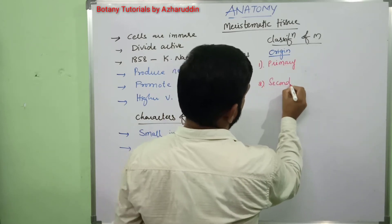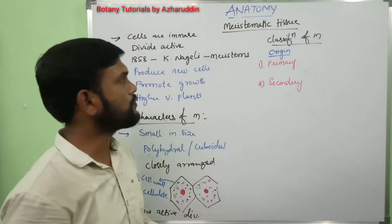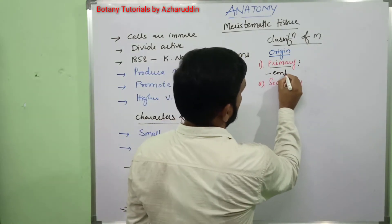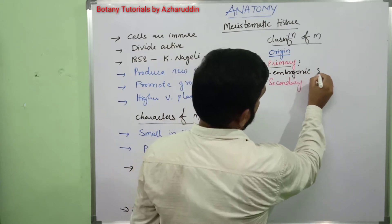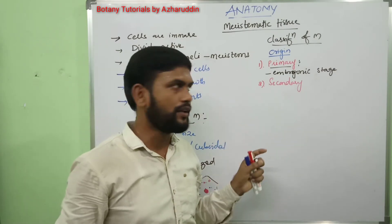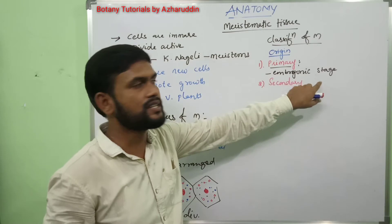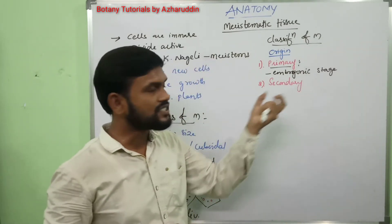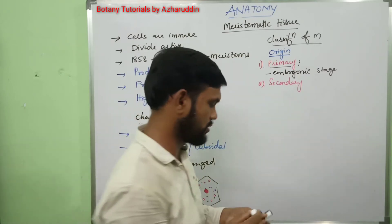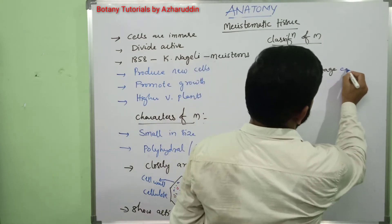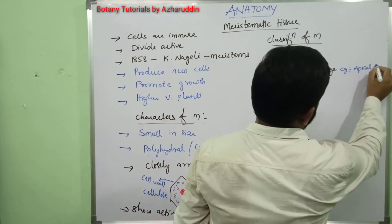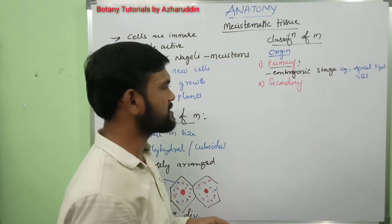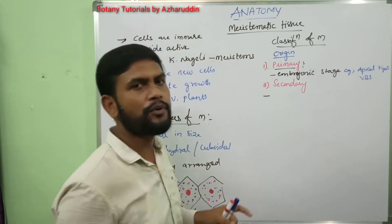Primary meristems are formed at embryonic stages and remain active in the mature plant body. They are mainly found at the tips of roots and shoots — that is, the apical parts. They are also present in the vascular bundles.